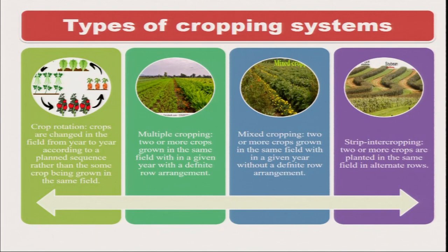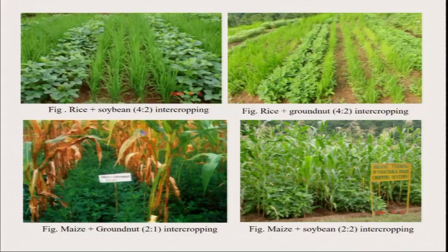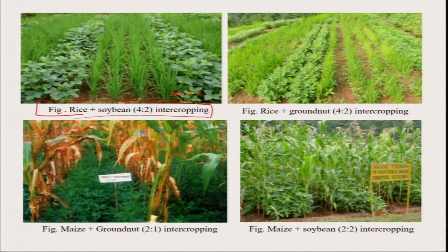There are different types of cropping systems — multiple cropping with 2 or 3 crops in the same field, mixed cropping, and strip intercropping. One example is rice plus soybean intercropping in upland conditions — 4 lines of rice along with 2 lines of soybean. Soybean has the capacity for biological nitrogen fixation, enriching soil fertility. They also provide an additional food source — humans need not only cereals but also pulses or oilseeds. A certain part of the fixed nitrogen is given to the rice, so the total nitrogen demand of rice is reduced.